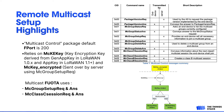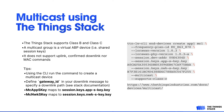The multicast class C session basically asks the end device to start a class C session at a specific time, and the answer provides a confirmation on the state of the session on the end device side. The Things Stack supports class A, class B, and class C. It also supports creating a multicast group device, which is a virtual activation-by-personalization device. This device is a multicast device that does not support uplinks, confirmed downlinks, or MAC commands.